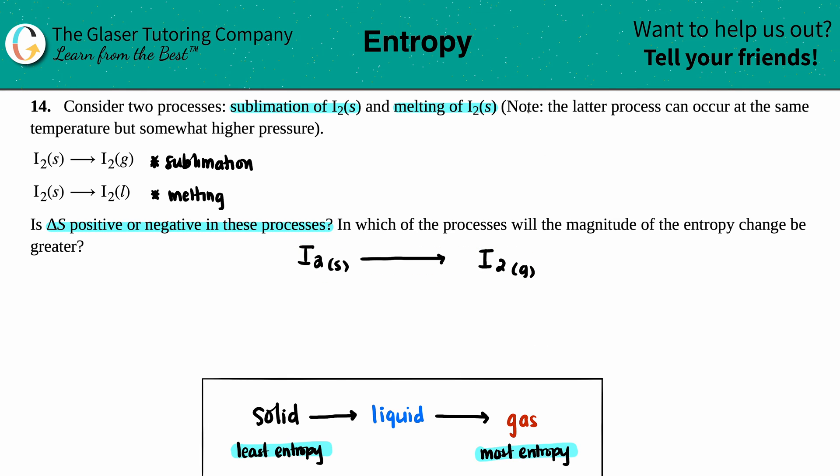Well, if you have a ΔS that's positive, that means that you're going to something that is more random and more chaotic or more disordered. On the flip side, if you have a ΔS value that's negative, that means that you lost randomness as you went through your process.